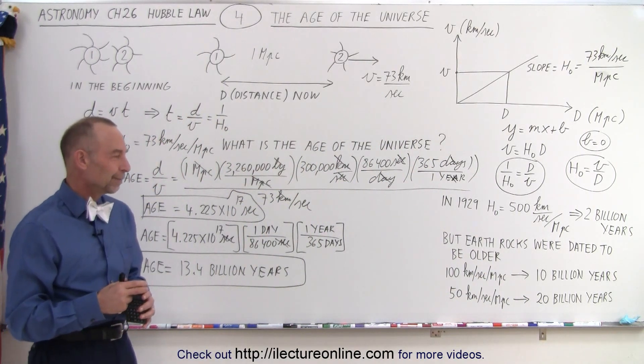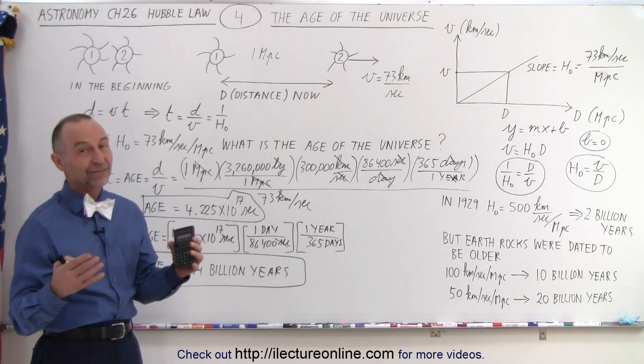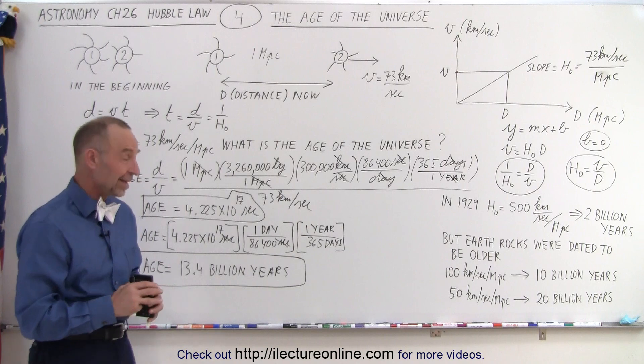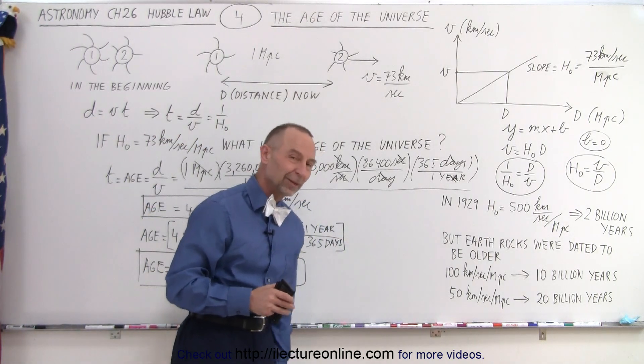And then they also measured the age of globular clusters. And some people believed that they were about 17 billion years old, the oldest ones found. So that would fall in line with the old value for the Hubble constant.